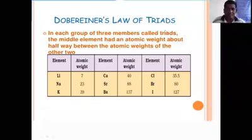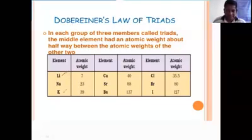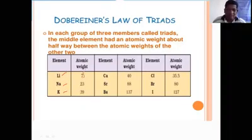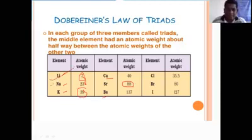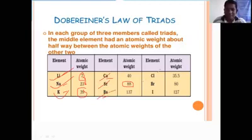According to the law of triads, the first example: lithium with atomic weight 7, potassium with atomic weight 39 — the average is (39 + 7) / 2 = 23, which is approximately the atomic weight of sodium. Similarly, taking calcium and barium, the mean value is approximately 80. Each set contains three elements with similar properties, and the set is known as a triad.